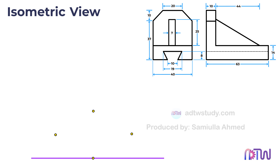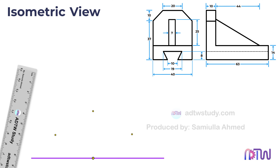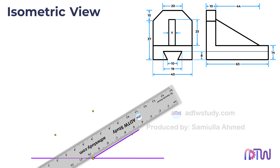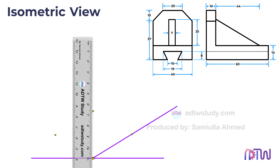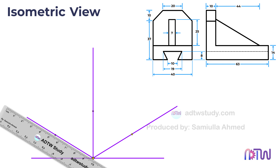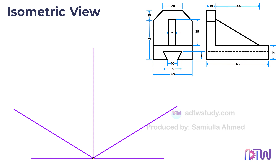Draw lines passing through these points from the center point. The line passing through the 30 degree mark will be the x-axis, the line passing through the 90 degree mark will be the y-axis, and the remaining line will be the z-axis. With these three isometric axes in place, we can now construct the isometric view of the object.